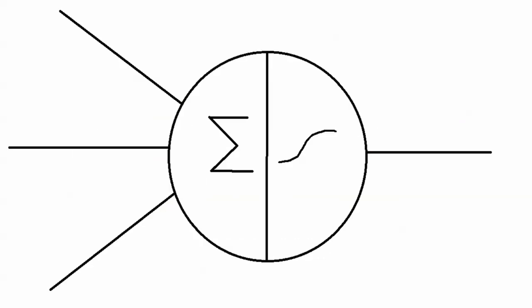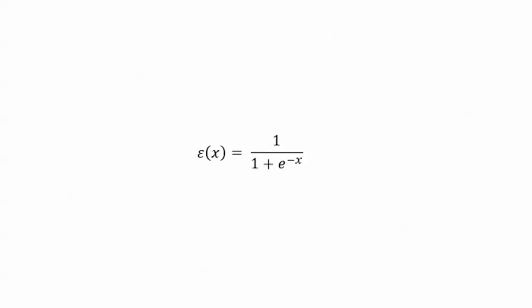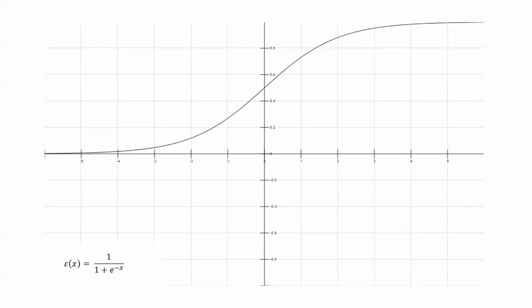How one neuron works is the following: you usually split the neuron into two parts. The first part is going to sum things up, and the second one is going to apply a function. We are going to use the sigmoid transfer function in this example, which is commonly used. The sigmoid transfer function looks like this: it is 1 divided by 1 plus e to the negative x. You can see that it is always below 1 and always above 0, so it will never produce any negative y values — no matter what you plug in, it is always between 0 and 1.